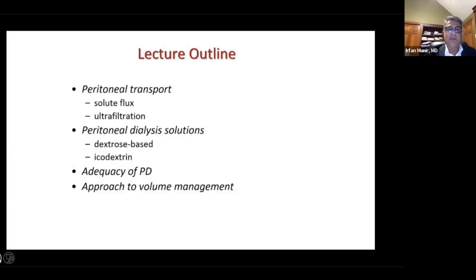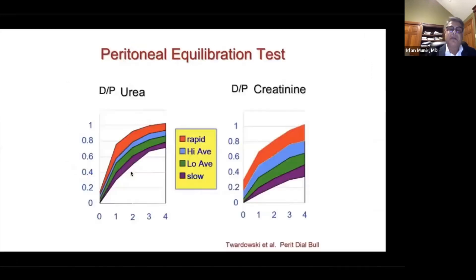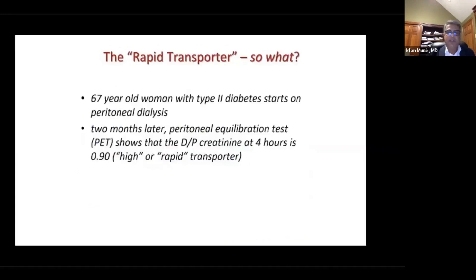We will also discuss the approach to volume management in peritoneal dialysis, especially for patients classified as high transporters, where volume management can be problematic. We mostly use the dialysate-to-plasma creatinine ratio to attribute certain characteristics to the peritoneal membrane. I'll go through three to four clinical cases, covering the clinical aspects of care and various aspects associated with peritoneal dialysis.